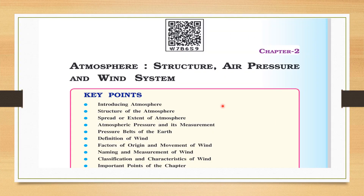So let us begin. It's your textbook screenshot — I will be explaining from here only. In Chapter 2, we will be studying about atmosphere and pressure belts. Topics include: why atmospheric pressure occurs, the definition of wind, wind movement, its origin, how wind is measured, and wind classification and characteristics. It is a very heavy but very interesting chapter. Today we will cover only the introduction part.